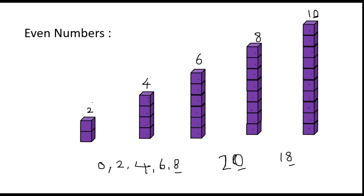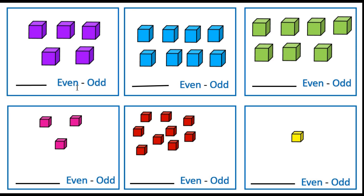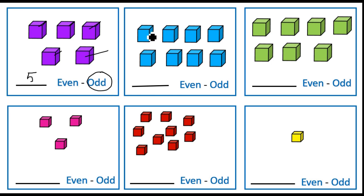Now we will do the worksheet. Count the blocks here: one, two, three, four, five — there are five blocks, so write five. Five is an odd number, so circle the odd number. Here, count the blocks: one, two, three, four, five, six, seven, eight — eight blocks, write eight. Eight is an even number.